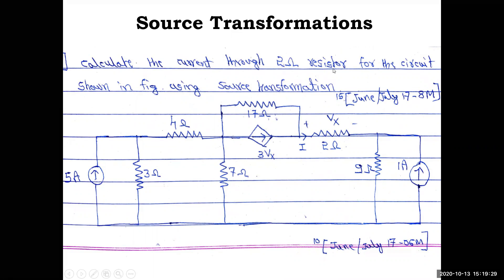Problem 2: Calculate the current through the 2 ohm resistor for the circuit shown, using source transformation. This question has also appeared in exams. The circuit has a 5 amp current source in parallel with 3 ohm, which is in series with 4 ohm. There is also a diamond-shaped symbol — a dependent source. Since it is a current type, it is a dependent current source in parallel with 17 ohm.